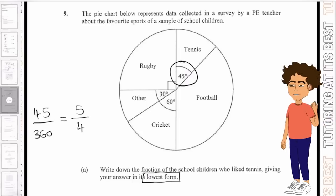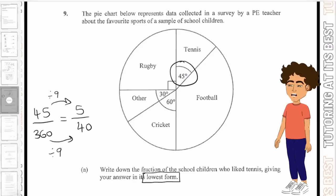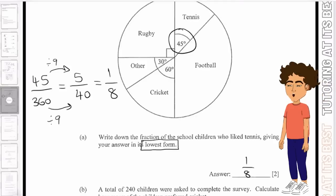And then if we go ahead and divide that again by 5, we get 1 over 8. And that is our answer. Let's now go to part B.